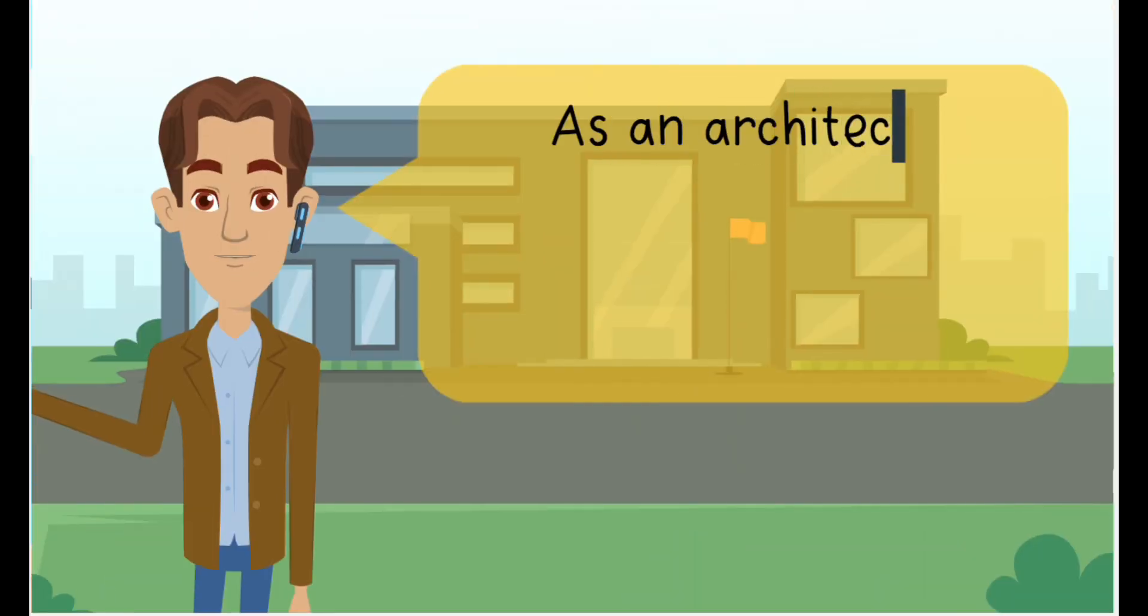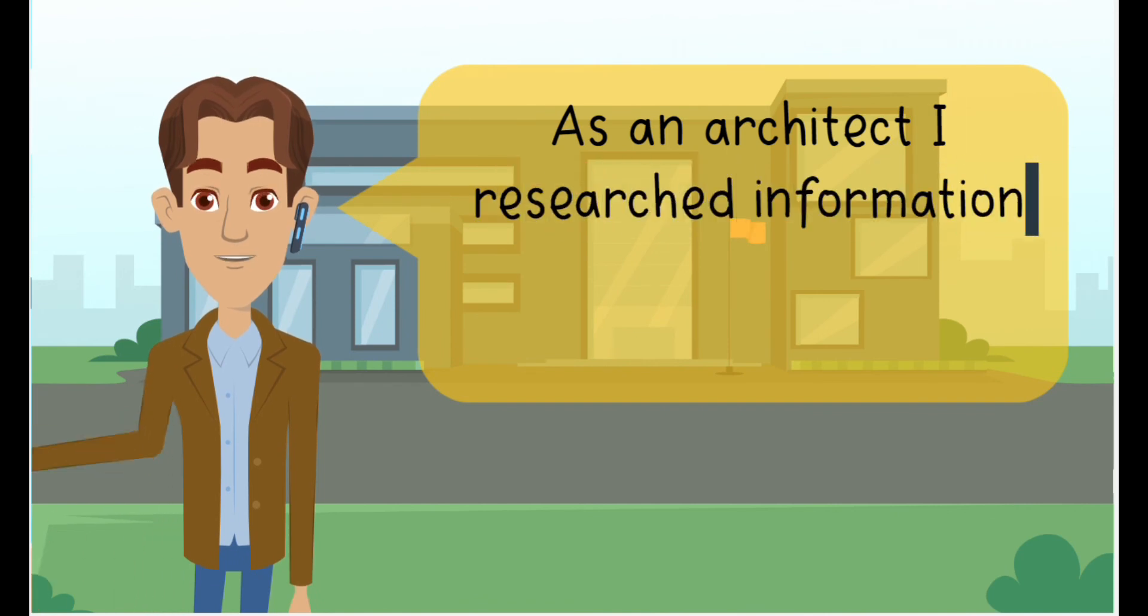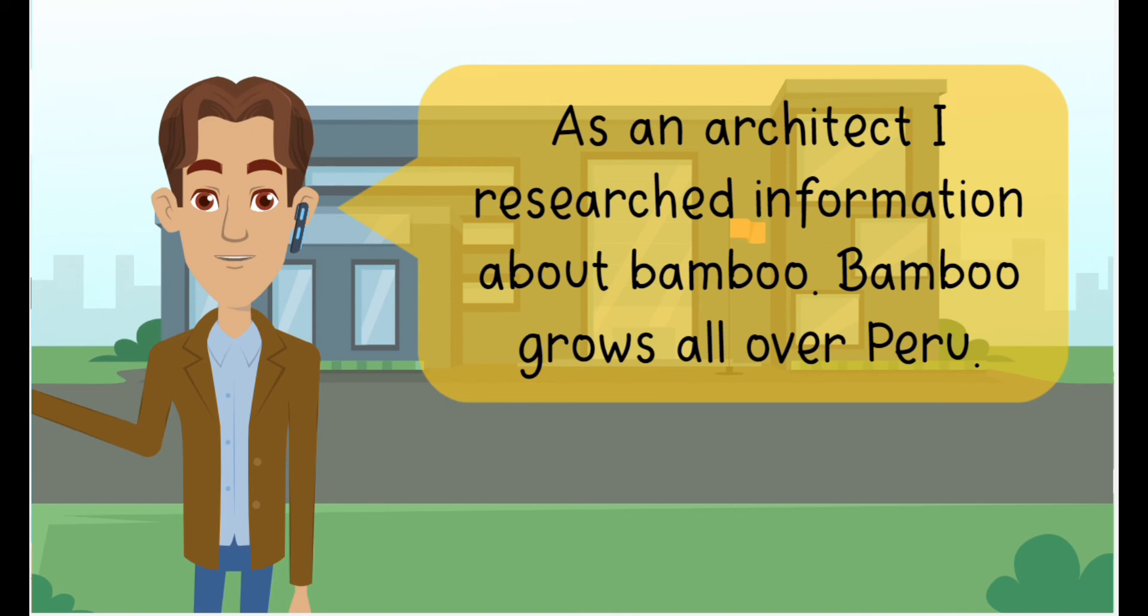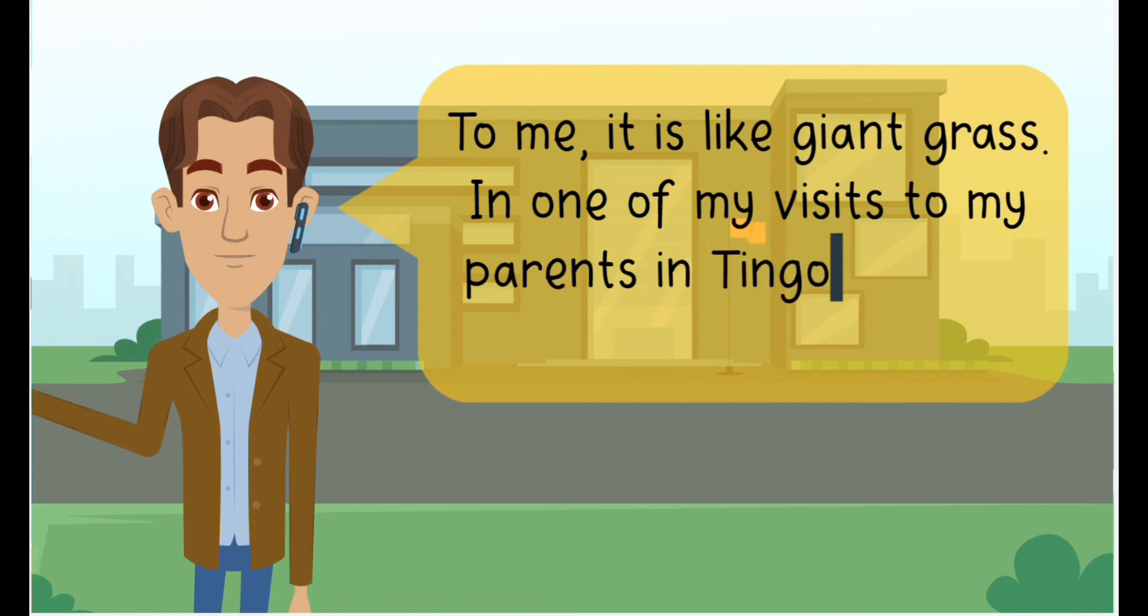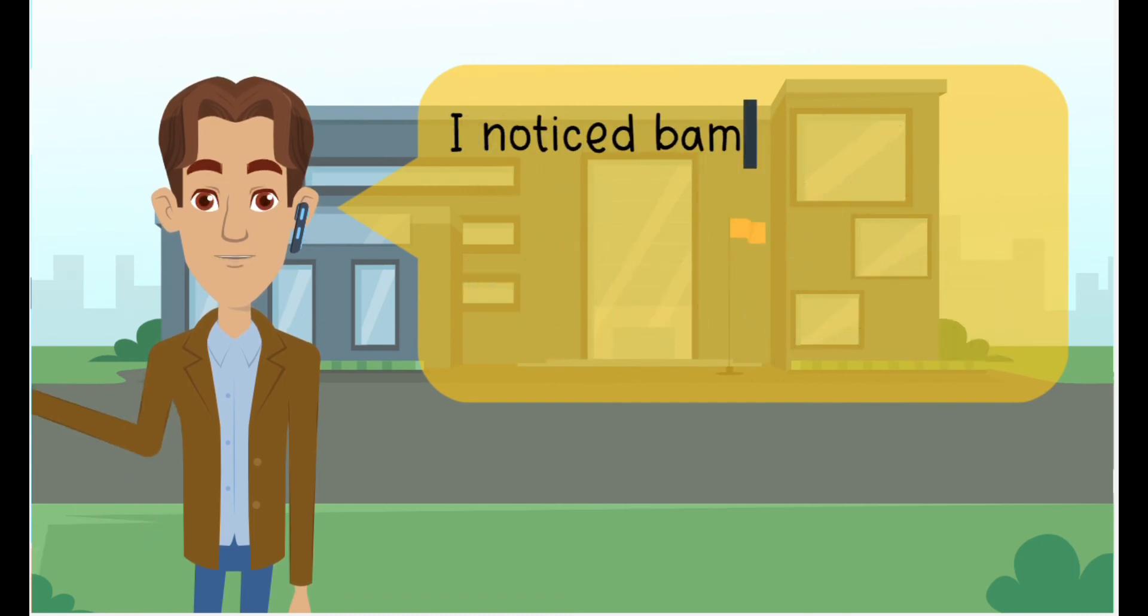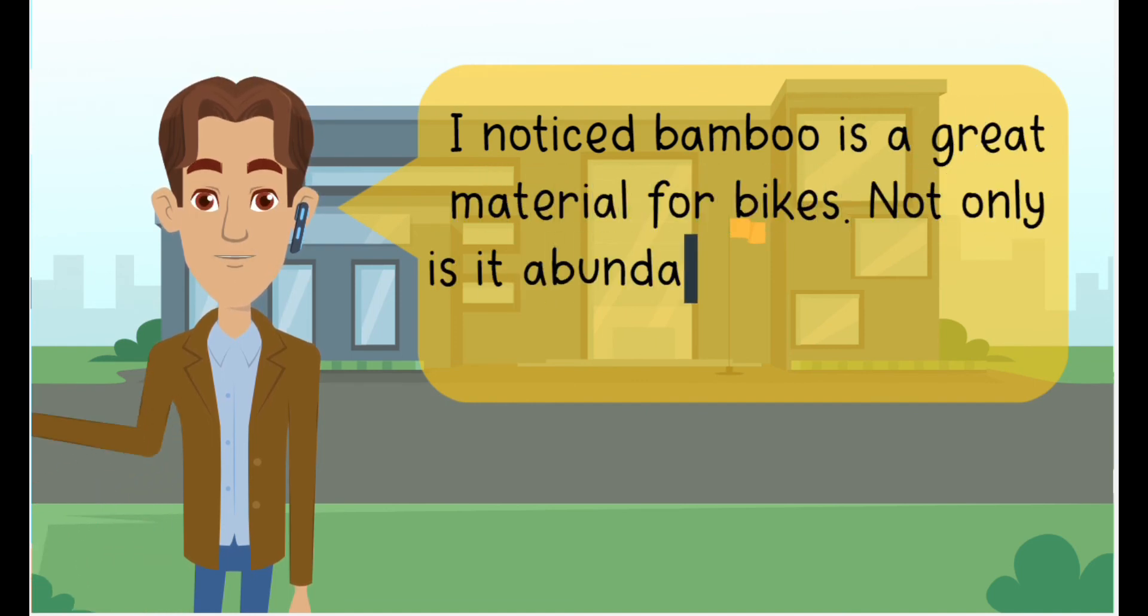How did you solve that problem? As an architect, I researched information about bamboo. Bamboo grows all over Peru. To me, it is like giant grass. In one of my visits to my parents in Tingo Maria, I made a bike for myself. I noticed bamboo is a great material for bikes. Not only is it abundant, it is light, eco-friendly, and inexpensive.